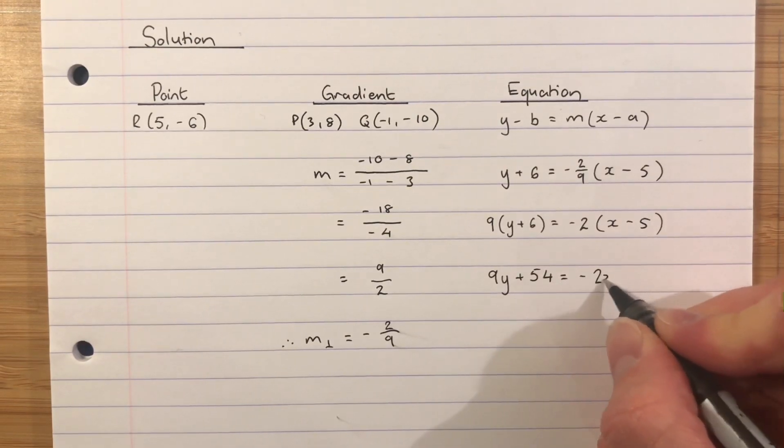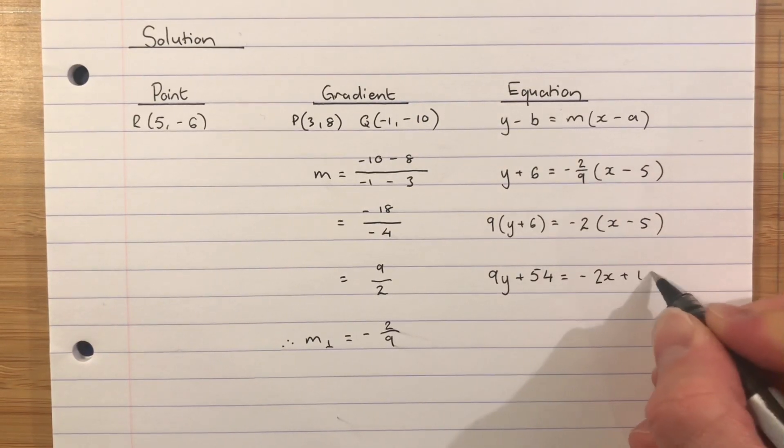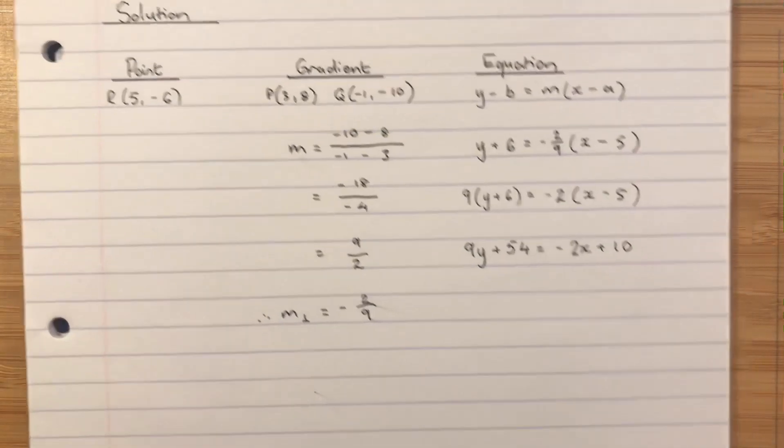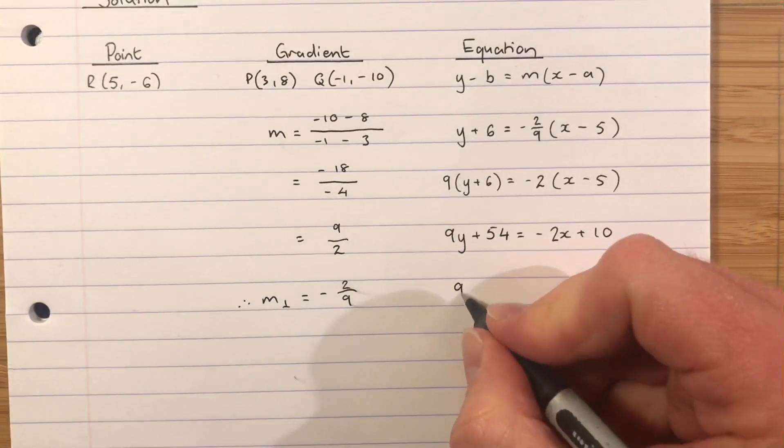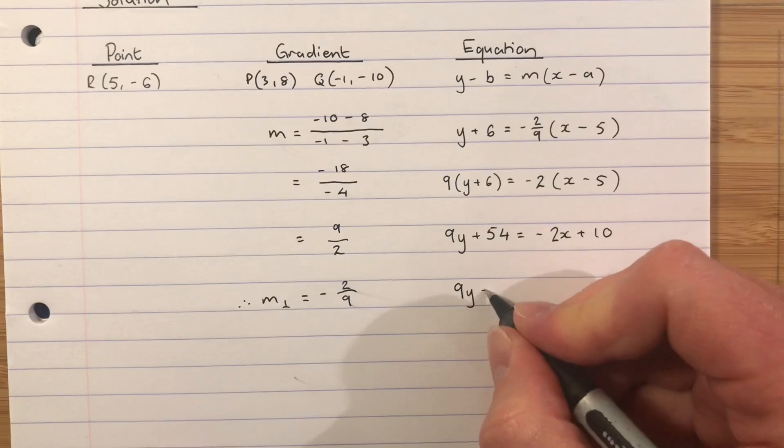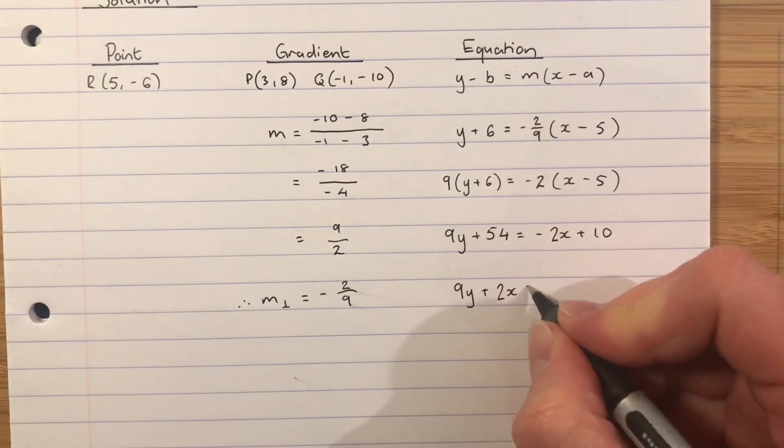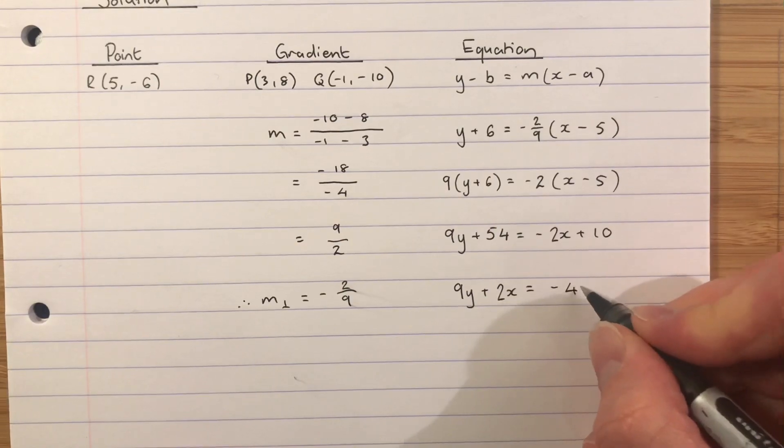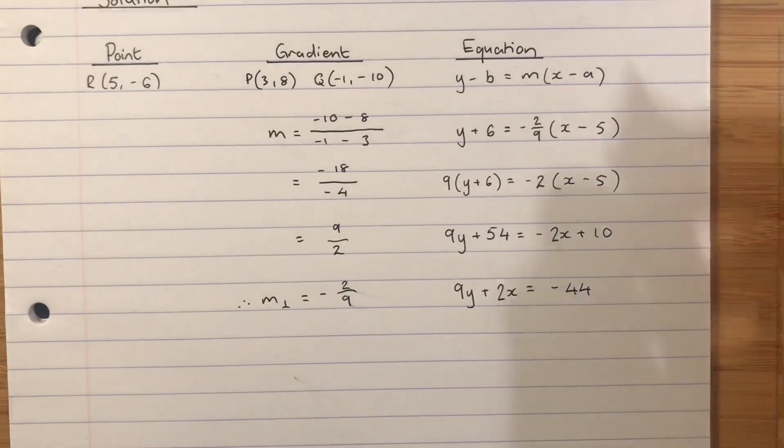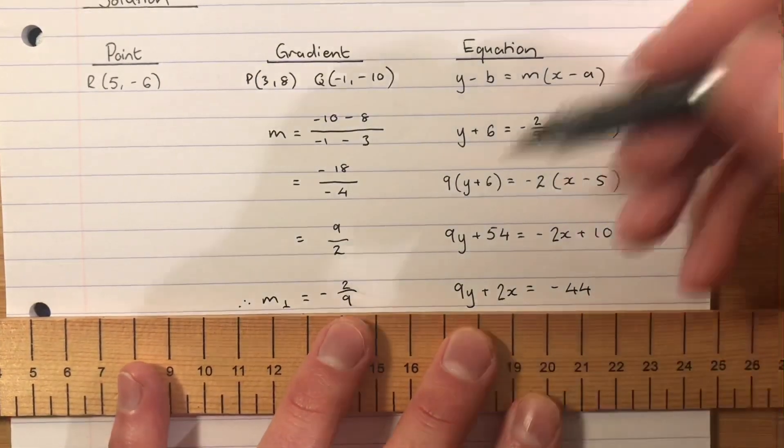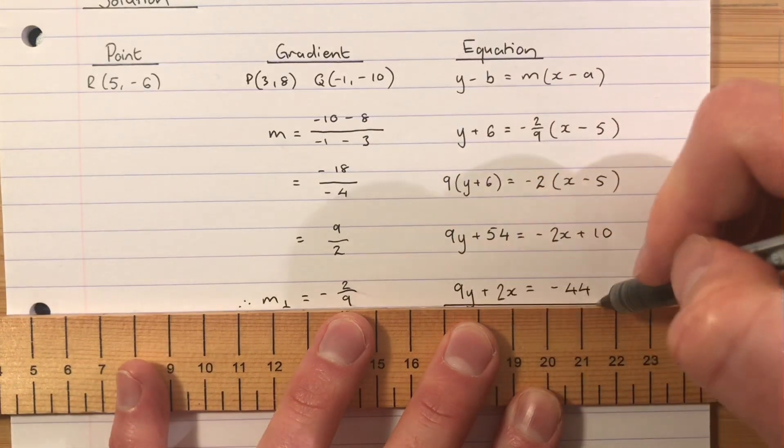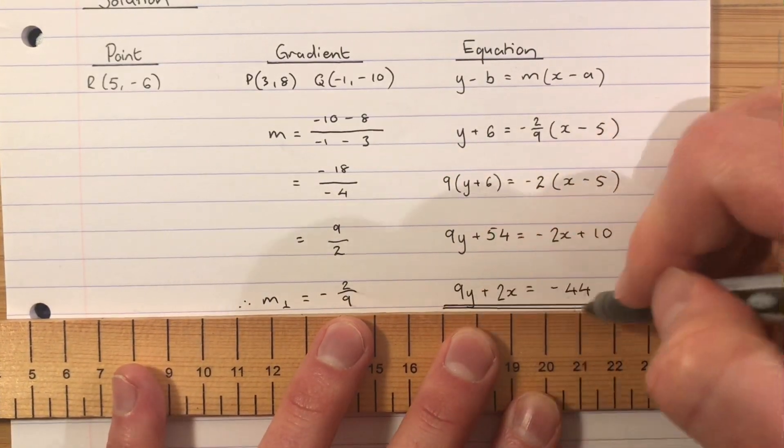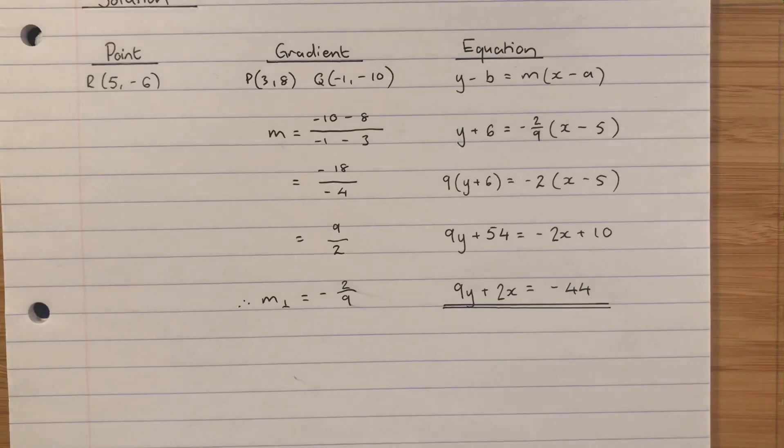Equals negative 2X add 10. So my final answer will be 9Y add 2X equals 10 subtract 54 equals negative 44. So the equation of the altitude from R is 9Y add 2X equals negative 44.